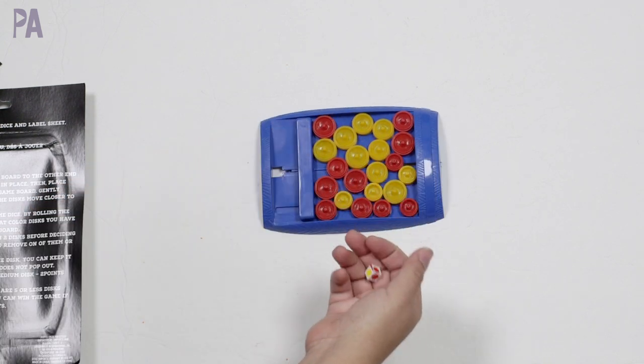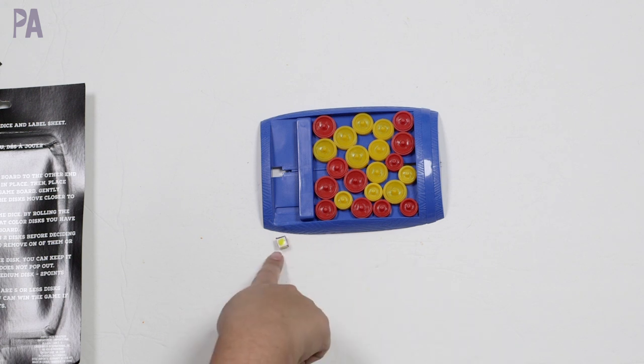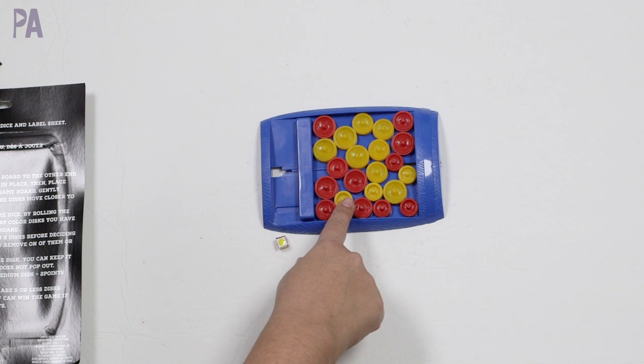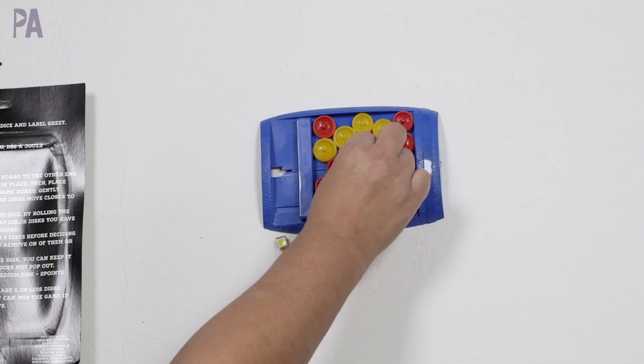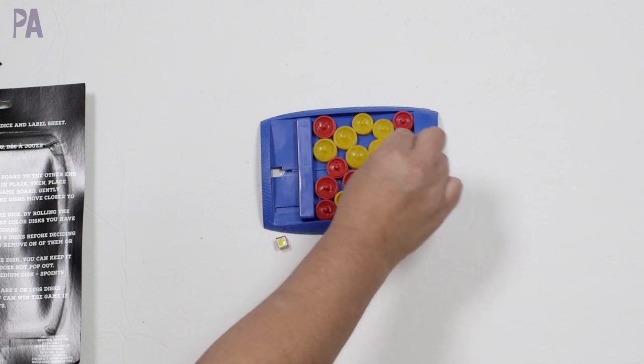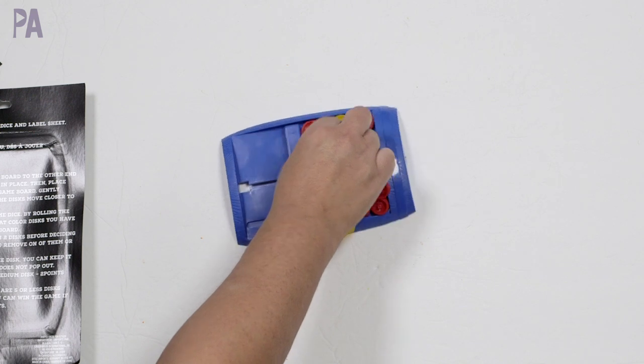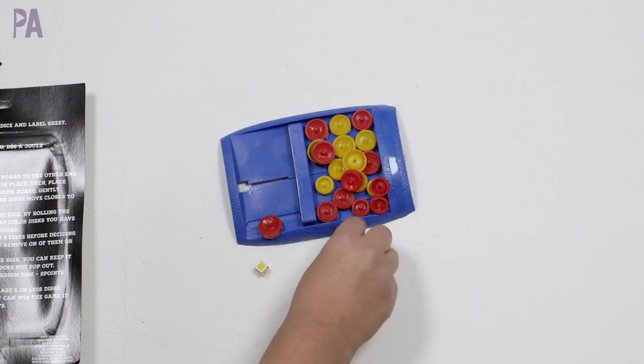So then you roll your little die here and it tells you what color you have to remove from the game board. Each disc has points. Small discs, these little tiny ones are one point. We have a large disc for three points and a medium for two. So you obviously want to get the more points. We don't want to let it pop. I got a yellow, so I'm going to go for a big one. That one looks hard. Let's try this one. And it pops.